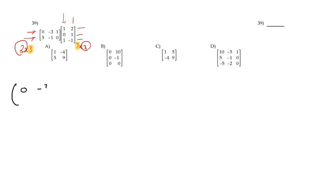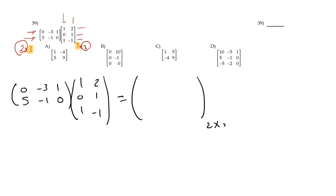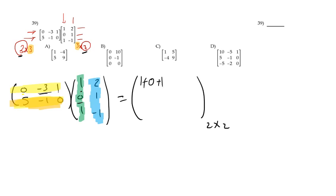I know that when I multiply the first matrix (0, negative 3, 1; 5, negative 1, 0) by the second (1, 2; 0, 1; 1, negative 1), it gives a 2×2 matrix — those dimensions come from the outer numbers. I multiply row by column. First element: 0 times 1 is 0, plus negative 3 times 0 is 0, plus 1 times 1 is 1. So the first element is 1.